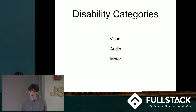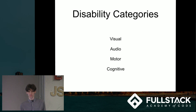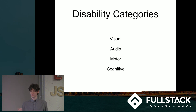Motor disabilities — things that make it difficult to use a mouse or even a keyboard. This is why you want to have your website be completely accessible solely from the keyboard, so that people who can't use a mouse can still use it completely. And then cognitive — this one's a little bit harder to quantify, but basically just make your information able to be accessed by people with learning disabilities, and even younger children — people who aren't necessarily going to be able to read and understand a long block of text.